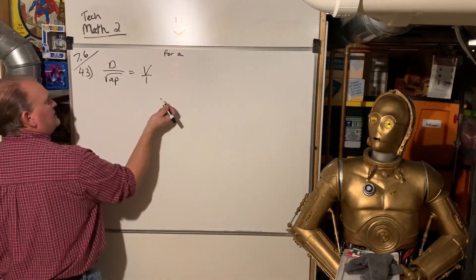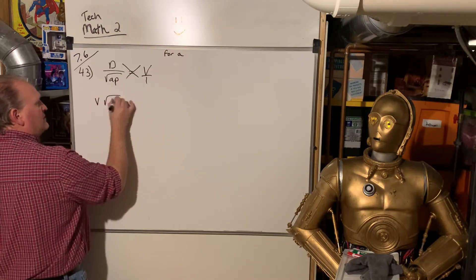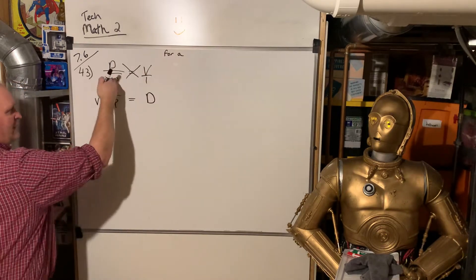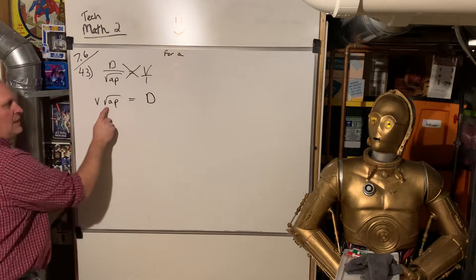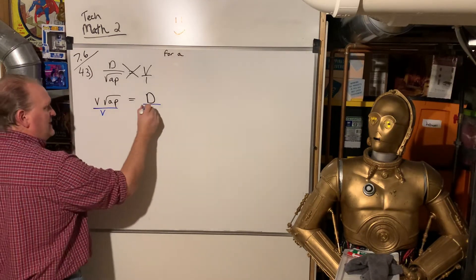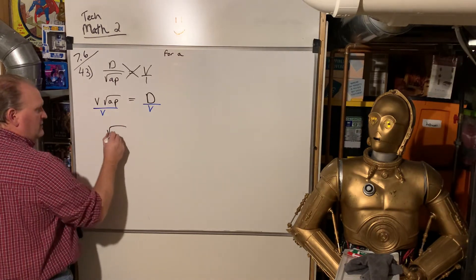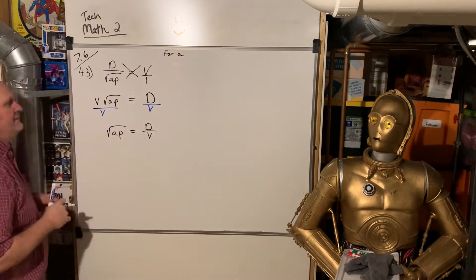So let's cross multiply and solve. V square root of AP equals D. So we got rid of that square root from being in the denominator. Now, we want to get the square root by itself. Divide both sides by V. So you've got square root of AP is equal to D over V.